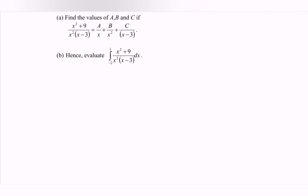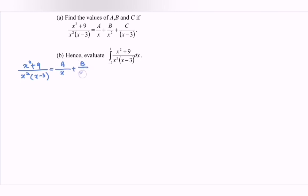We have the situation x squared plus root of 9 over x squared, which is the repeated linear, multiplied with the linear case x minus 3. Then we have the situation a over x plus b over x squared plus c over x minus 3.